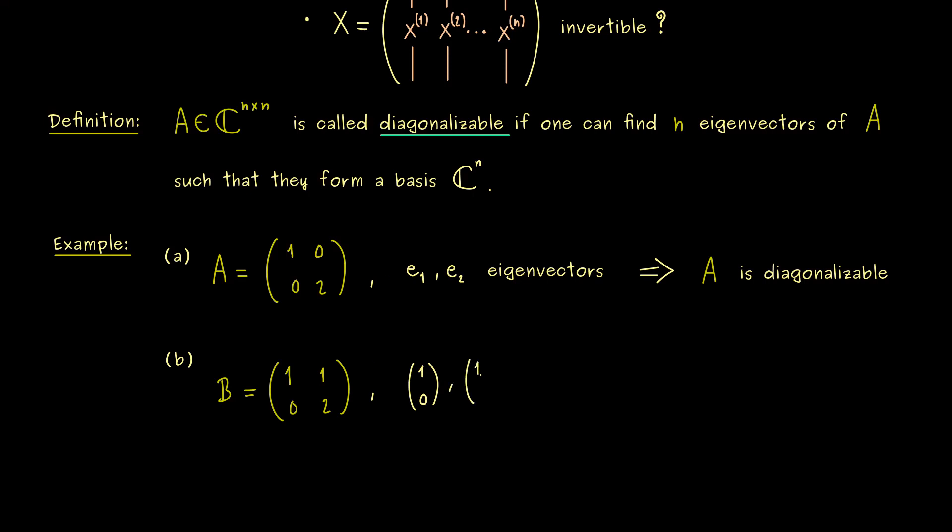However, after a quick calculation, we see that for example, 1, 1 is an eigenvector. And these 2 eigenvectors here are enough and we immediately see, they form a basis of C^2 as well. Hence, this triangular matrix B here is also diagonalizable.